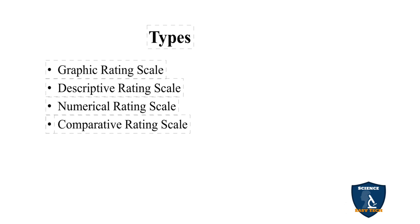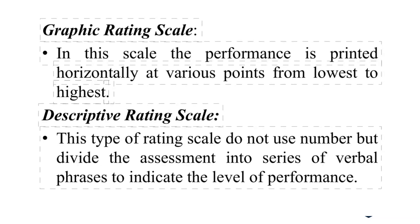There are several types of rating scale: graphic rating scale, descriptive rating scale, and numerical rating scale. In a graphic rating scale, the performance is printed horizontally at various points from lowest to highest. For example, numbers from 0 to 10 — that is, 0, 1, 2, 3, 4, 5, 6, 7, 8, 9, 10 — going from lowest to highest points.